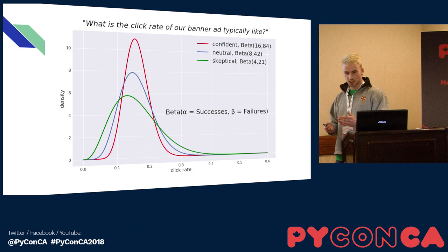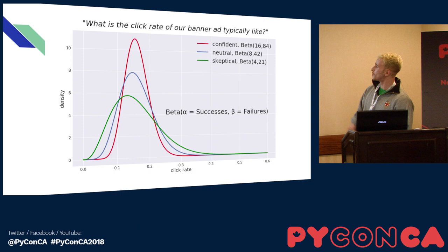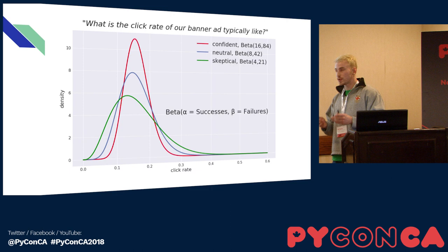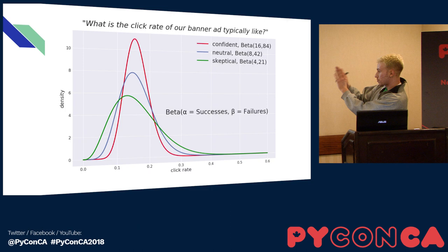Let's say I did some research and found that average banner ads in my industry have a click rate of about 16%. I can model this belief in a couple of different ways depending on how I feel about it. If I was confident, I could use a Beta(16, 84) to represent that, which is the red curve. But if I was more skeptical, I could scale it down to a Beta(4, 21), which is still centered around 16% but is more spread out across all possible click rates. For the sake of this experiment, I'll take a neutral approach and use a Beta(8, 42) distribution.